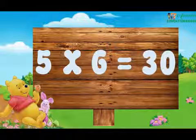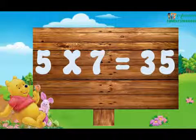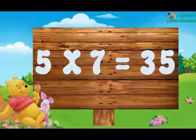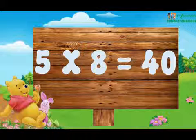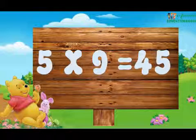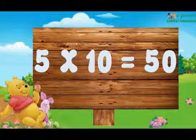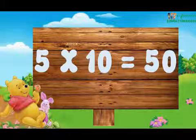5 sixes are 30. 5 sevens are 35. 5 eights are 40. 5 nines are 45. 5 tens are 50.